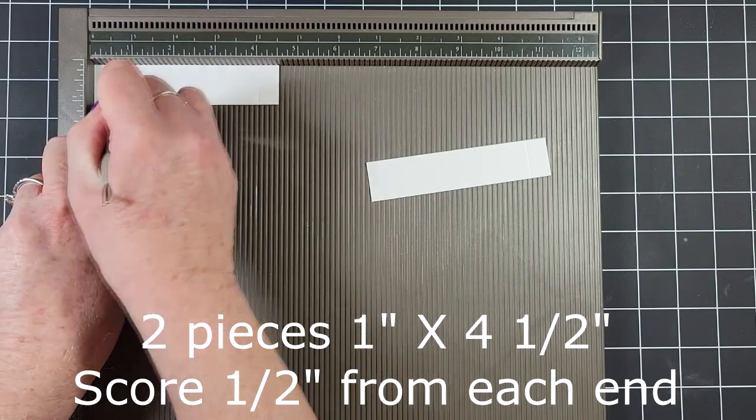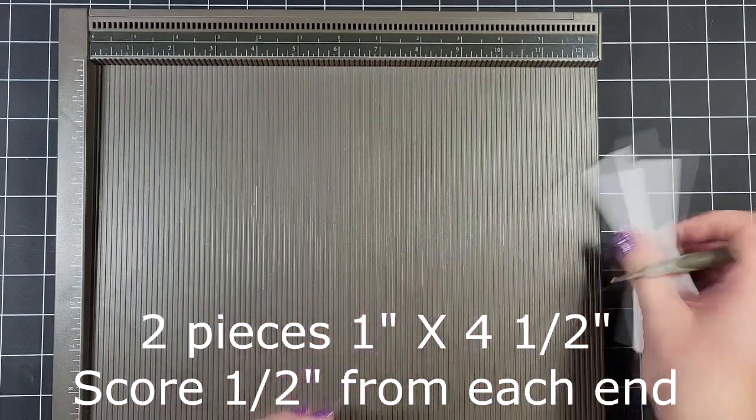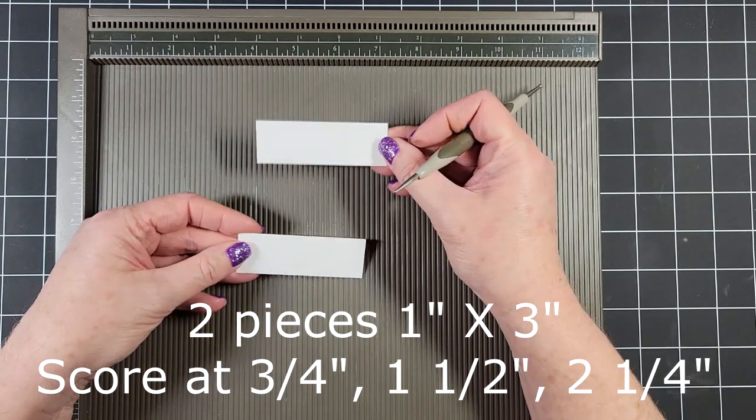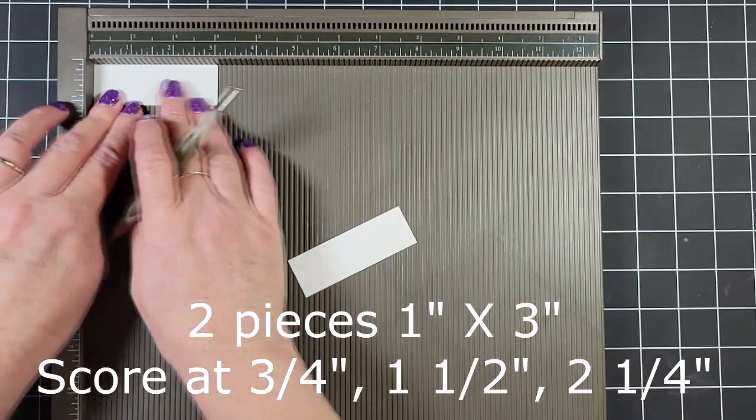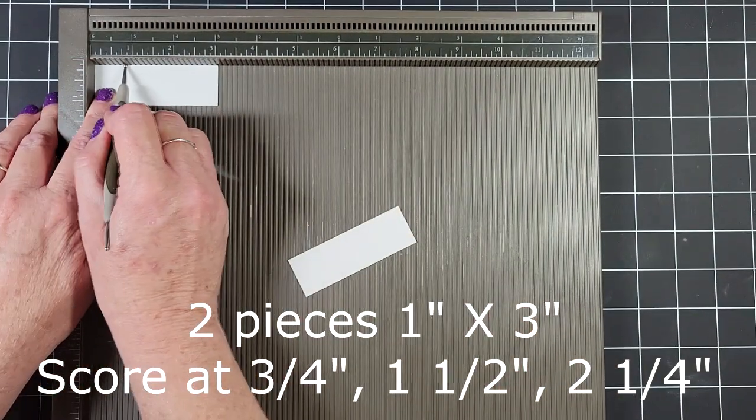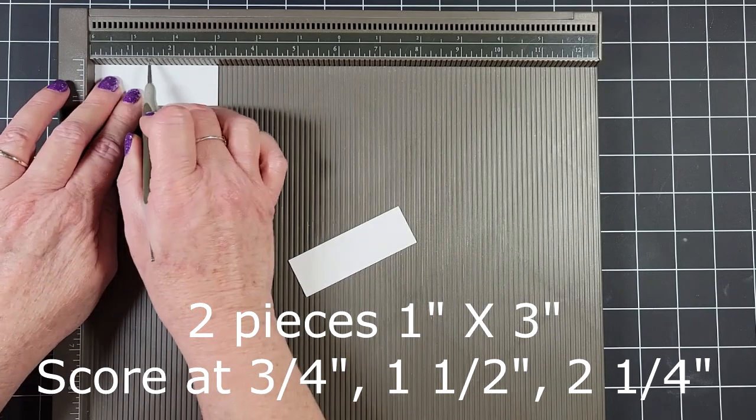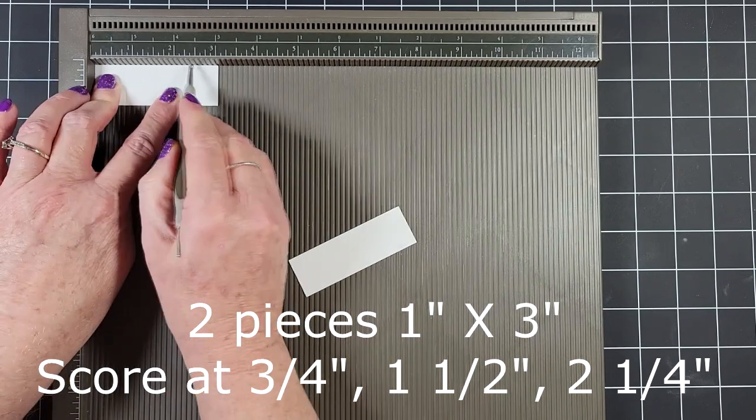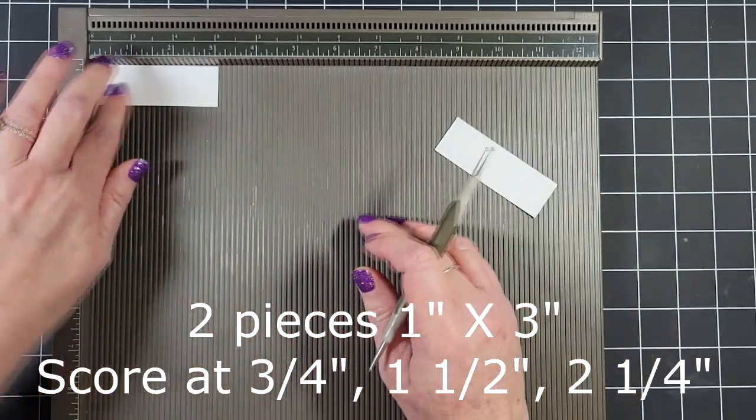So half inch, and then flip it, and half inch again. Alright, so now I have two pieces measuring one inch by three inches. And we're going to score this at three quarters of an inch, one and a half inches, and two and a quarter inches.